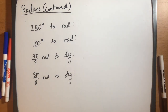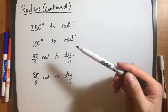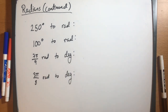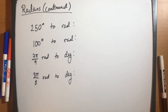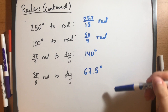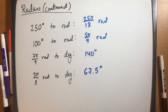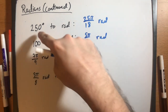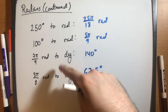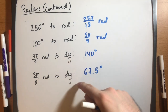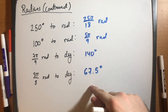Using the conversion formulas from degrees to radians or radians to degrees, try to convert these angles to their other units. Pause the video and try to do these problems on your own. Here are the solutions: for angles in degrees you had to multiply by pi over 180, and for angles in radians you had to multiply by 180 divided by pi to get the correct answers.